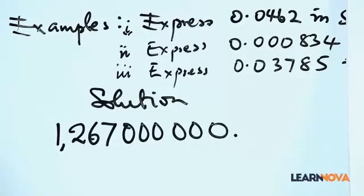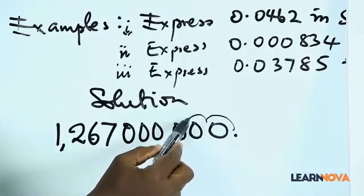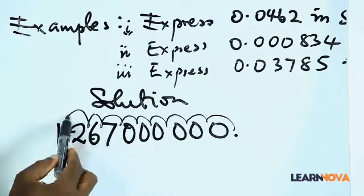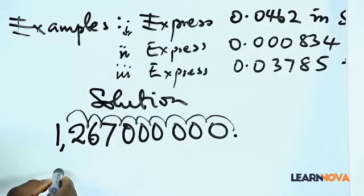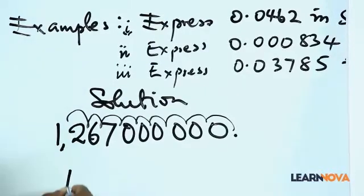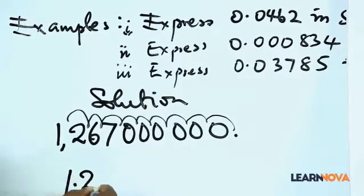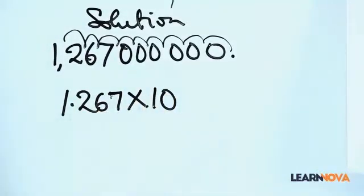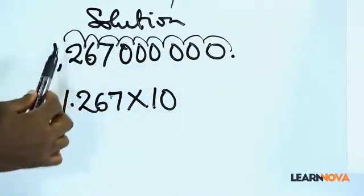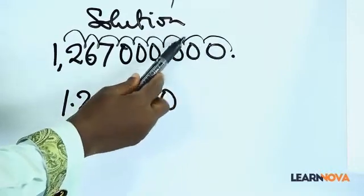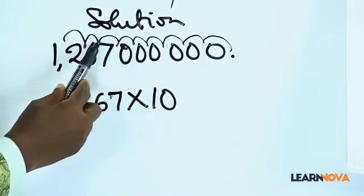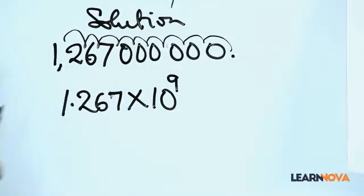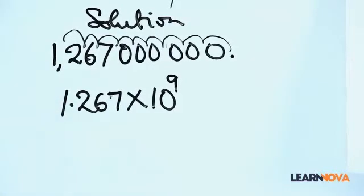Let's count how many places we moved: one, two, three, four, five, six, seven, eight, nine. So I can now express this number as 1.267 multiplied by 10 raised to the power 9. We moved the decimal point nine places backward to place it between the one and the two, so the standard form is 1.267 × 10^9.